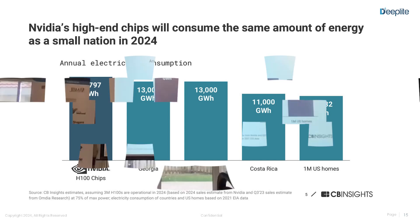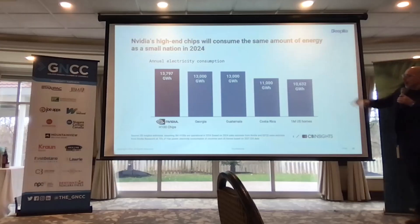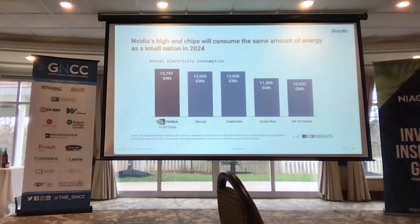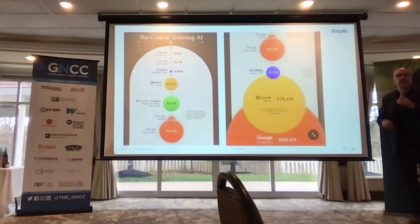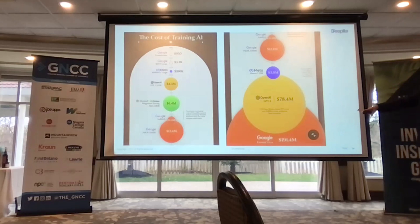To put that in context — NVIDIA's latest chip, the H100: CB Insights predicted that if all H100 units are running in 2024, they'll consume more power than the entire state of Georgia, the country of Guatemala, Costa Rica, and about a million U.S. households. The cost of training these models is enormous — GPT-4 cost an estimated $79 million just in processing power. Google Gemini, their latest multimodal model, cost almost $200 million to train.